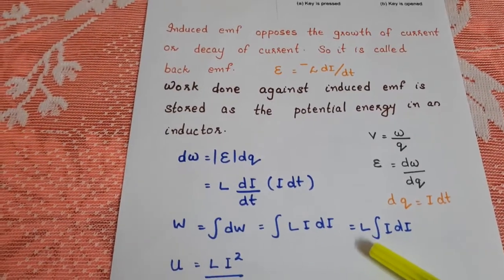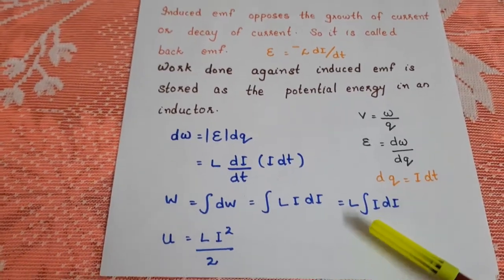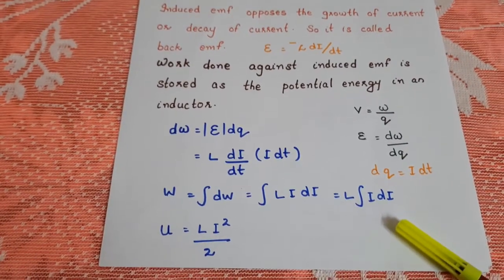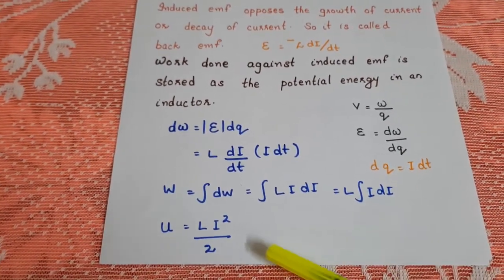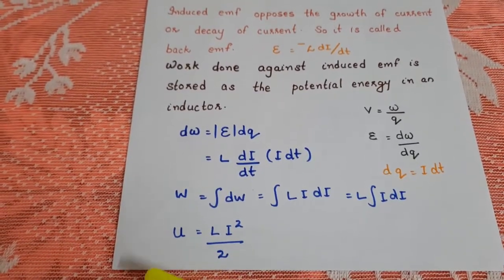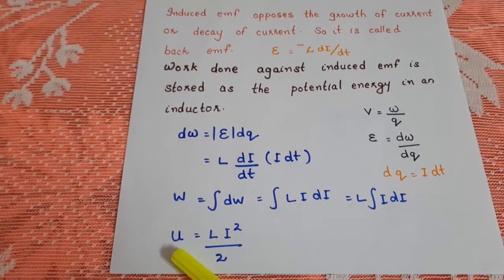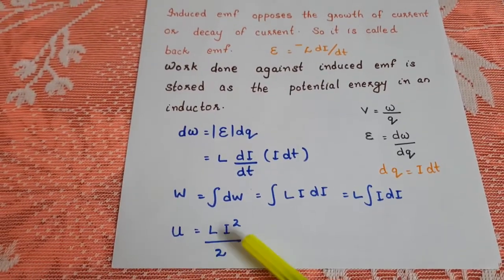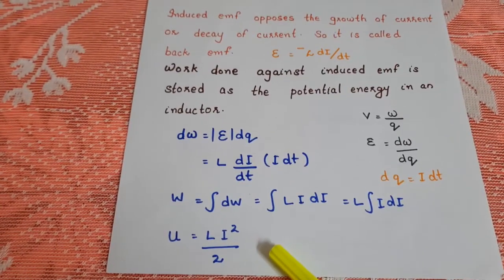So L is a constant, L into integral I dI. Integral I dI is I square by 2. This work is the potential energy in the inductor. So the potential energy is equal to half L I square.